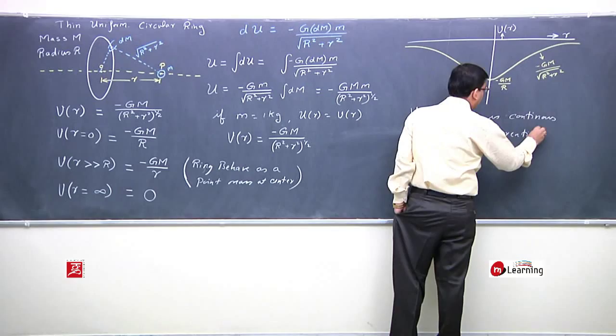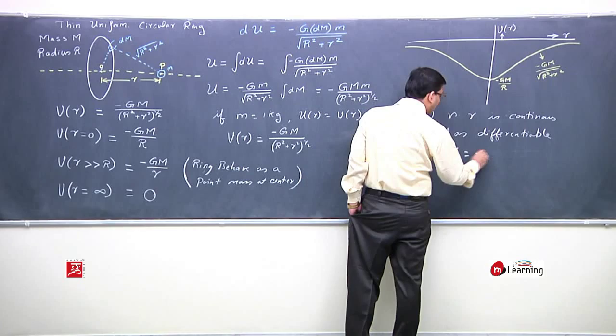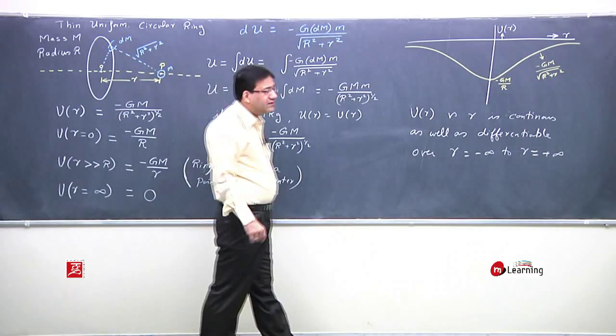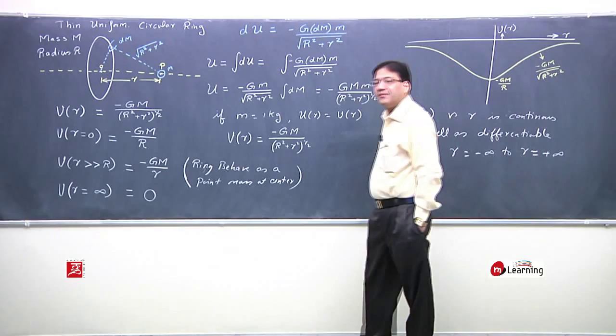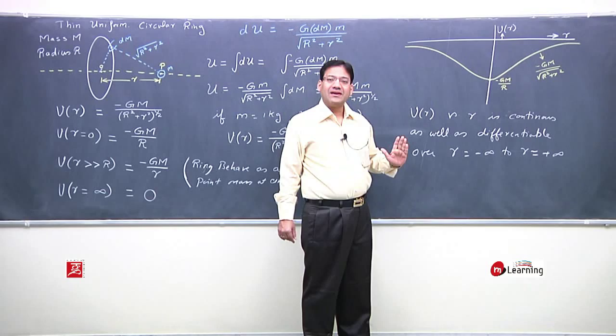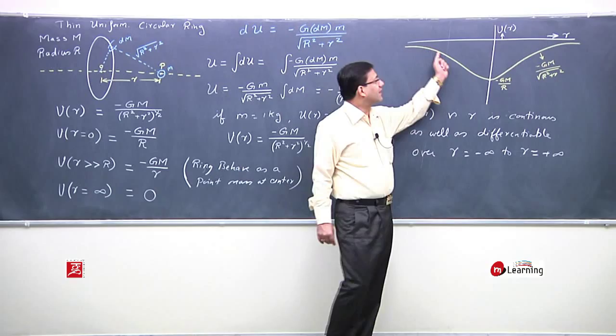It is continuous and differentiable over R equal to minus infinity to R equal to plus infinity. From minus infinity to plus infinity, this is a continuous curve and also a differentiable curve. What does this mean? I will explain in gravitational field, you will understand what it means for this curve to be differentiable. First, let's note down that in this situation, gravitational potential versus R, this curve appears continuous to us, and it's also completely smooth as its value changes, so it is differentiable.